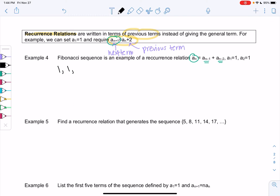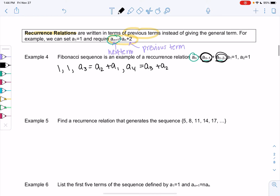And then a_n, so a_3, will be a_{3-1}, so a_2, and then 3 minus 2 is 1, so a_2 plus a_1. It's the previous term and then the previous, previous term. So then a_4 would be 4 minus 1, so a_3 plus a_2.